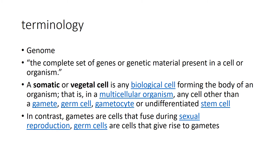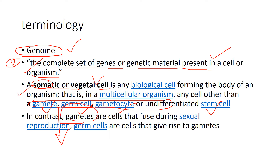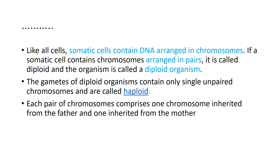Before going to the mainstream topic, you need to know more basic concepts. First is the definition of genome — it is nothing but the complete set of genes or genetic material present inside the cell. Second is somatic or vegetal cells. 'Soma' means body, so the cells that give rise to the body of the organism are called somatic or vegetal cells. These do not include any gamete, germ cell, gametocyte, or undifferentiated stem cells.